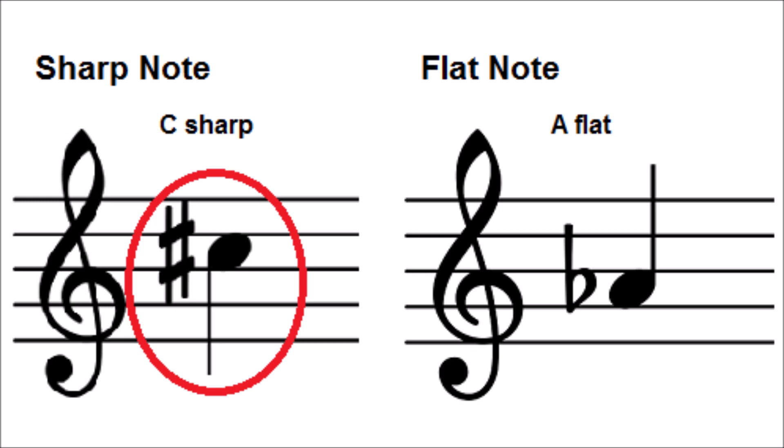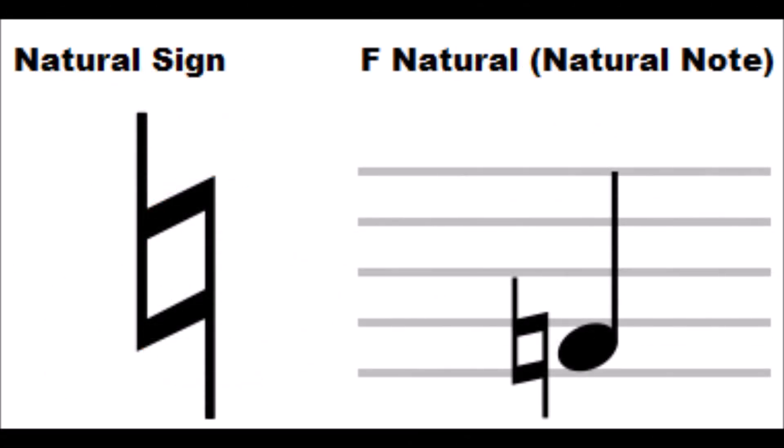A sharp sign has a height of about three staff spaces. A natural sign looks almost like a sharp sign, but some of its lines are not as long. To draw the natural sign, think of drawing an L, then adding the number 7 to it. The space in the middle of the natural sign is placed on the line or space of the note head that it affects. A natural sign is about three staff spaces in height.